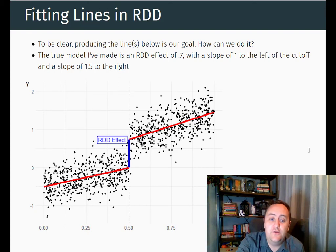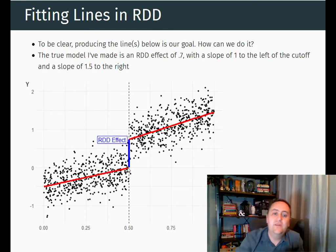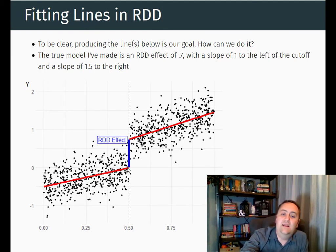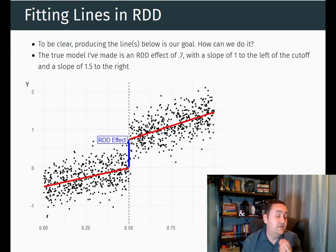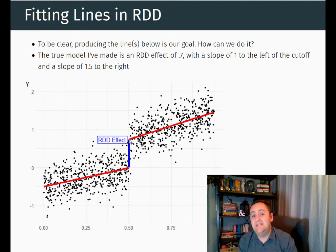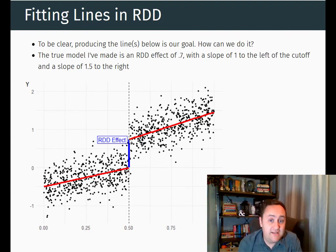Then the way that those lines are shaped is going to tell us what we predict the outcome to be at the cutoff depending on which direction you're coming from. So we follow this line on the left — here's what I predict your outcome is going to be with an x value of 0.5. And I'm going to come out from the right — here's what I predict your y value would be with a cutoff of 0.5. And the jump that we predict using our ordinary least squares fits — that is going to be our regression discontinuity effect.